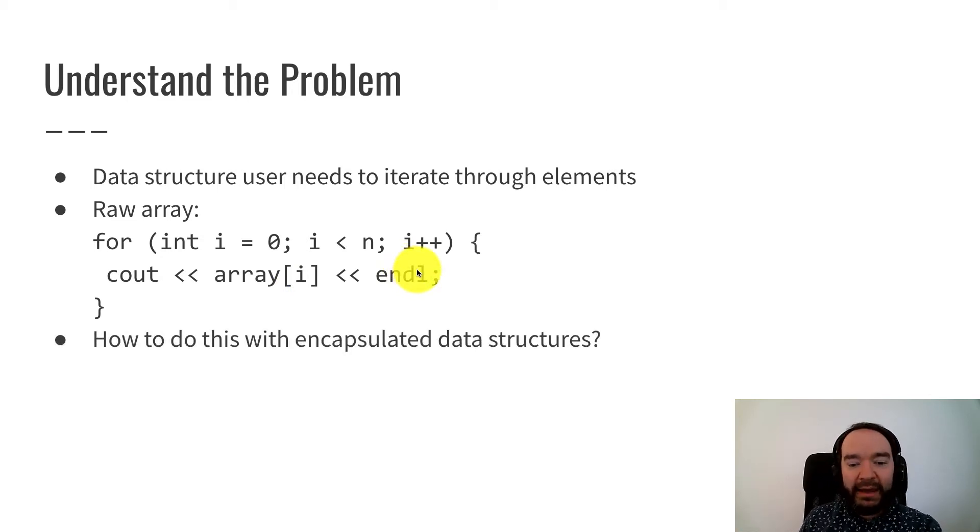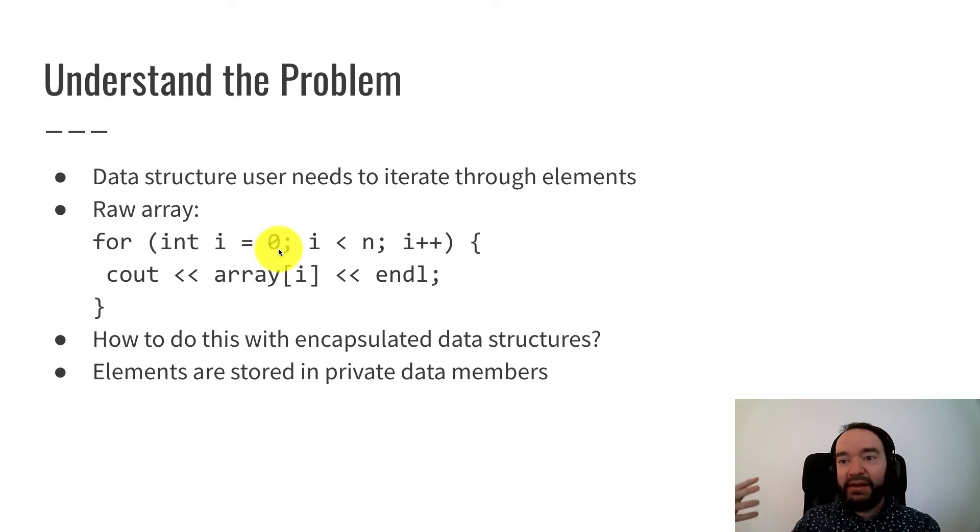But how would we do this with an encapsulated data structure? The idea of encapsulation is an object-oriented programming discipline that the elements are stored in private data members. And that was not really the case with std pair. Remember, std pair made the first and second elements public. But a more conventional design is to make the data elements private. And if that's happened, then you can't write a for loop like this because the class has those data members as private members. Users of the class cannot access them.